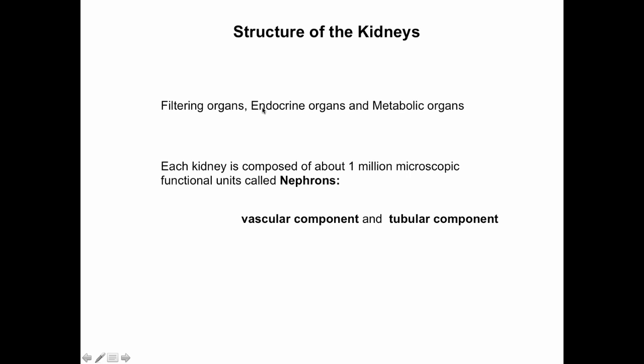The kidneys are filtering organs, but they are also endocrine structures — they produce hormones. One of the most important hormones the kidneys produce is erythropoietin, otherwise known as EPO. Erythropoietin acts on the bone marrow and stimulates red blood cell production. So EPO produced by the kidneys is essential for maintaining normal red blood cell concentration in the blood.